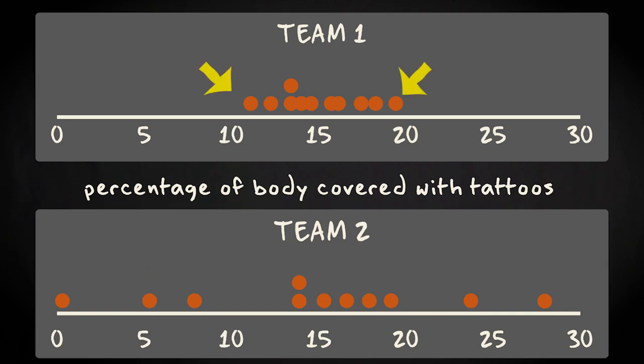The players of team 1 have covered about 10 to 20% of their bodies with tattoos. In the second team, the players differ much more from each other in terms of their tattoo density. The percentage ranges from 0 to about 30%. Thus, these teams strongly differ from each other.